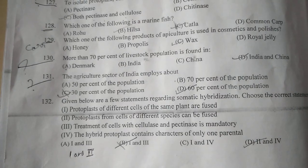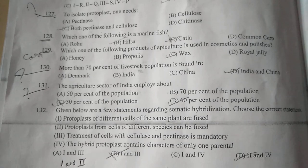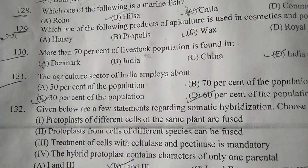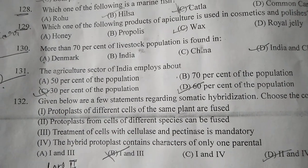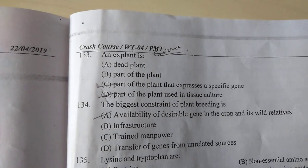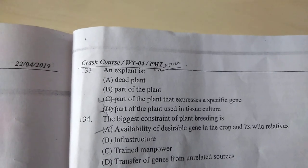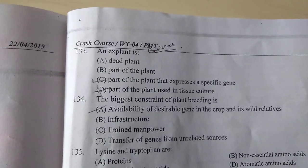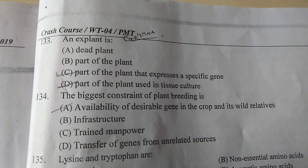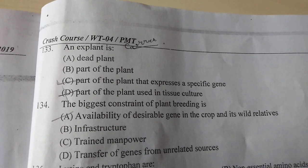Question number 132: Given below are the statements regarding somatic hybridization. Choose the correct statement — the answer is second and fourth. Question number 133: X plant is part of the question. Question number 134: The biggest constraint of plant breeding is — A is the answer — availability of desirable genes in the crop and its wild relatives.